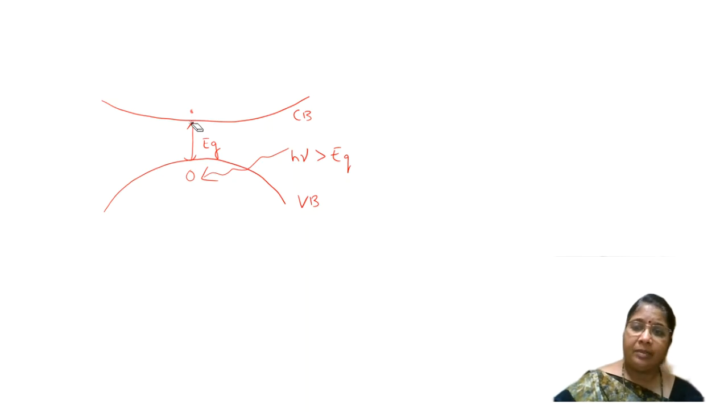But occasionally what happens is, there is a repulsive force on this electron by the existing electrons. There are too many electrons which exert a repulsive force on this electron, and this hole also has a control over this electron. There is a force of attraction between this electron and hole.